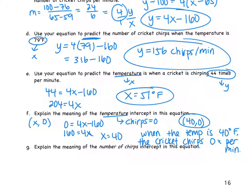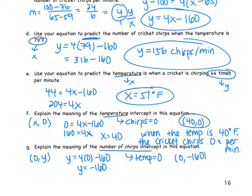Okay, so part G. Explain the meaning of the number of chirps intercept. So number of chirps intercept means the other variable, in this case temperature, is going to be zero. So for the intercept, you have to remember it's always the other variable that's zero. In this case, how do we find Y? Set X equal to zero. Y is equal to negative 160. So this is the point zero, negative 160.